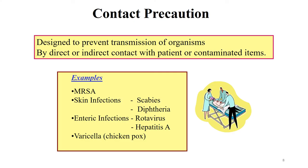Contact precaution is used when disease is transmitted by direct or indirect contact with a patient or contaminated items - fomites. This is to prevent transmission of organisms that can be transmitted through fomites or through direct contact with the patient. Examples of diseases transmitted through direct contact or fomites include MRSA (methicillin-resistant Staphylococcus aureus), certain skin infections such as scabies, diphtheria, enteric gut infections, rotavirus, hepatitis A, and chicken pox.